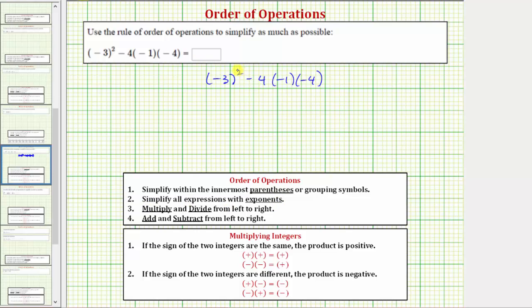Notice here we have an exponent of two so we want to simplify the square of negative three. Well the square of negative three means we have two factors of negative three. Negative three times negative three is equal to positive nine. So the expression simplifies to positive nine minus four times negative one times negative four.